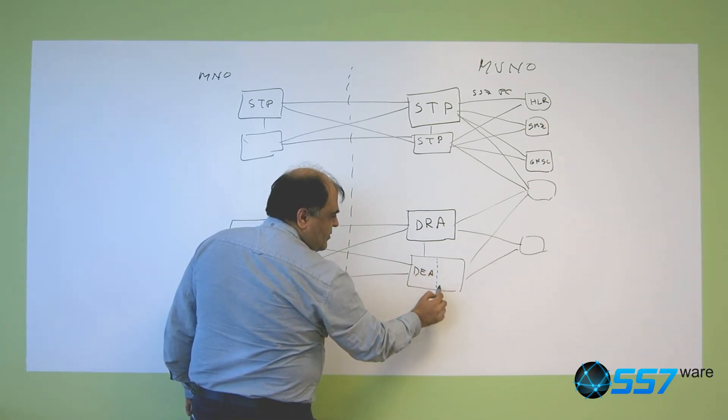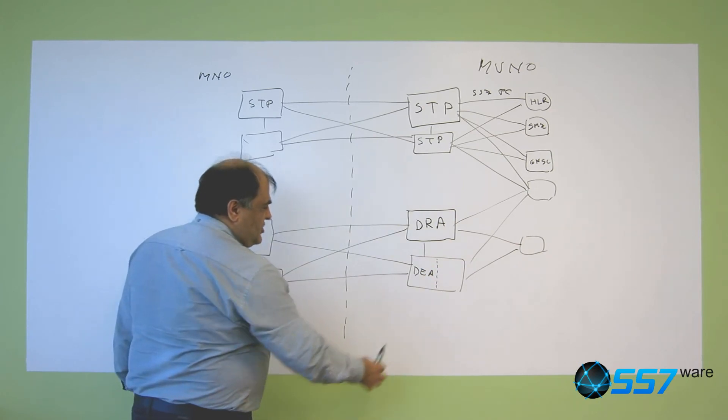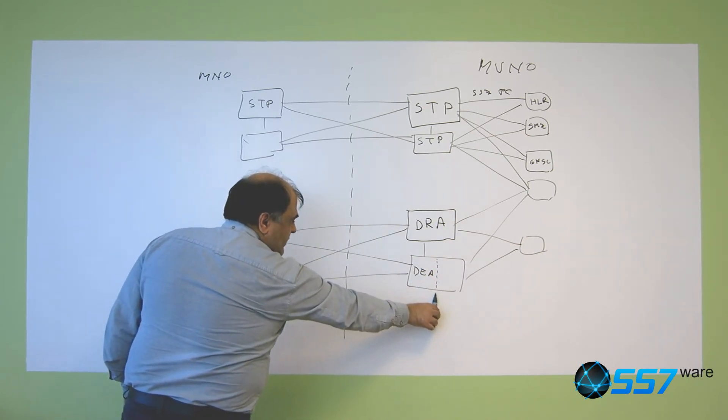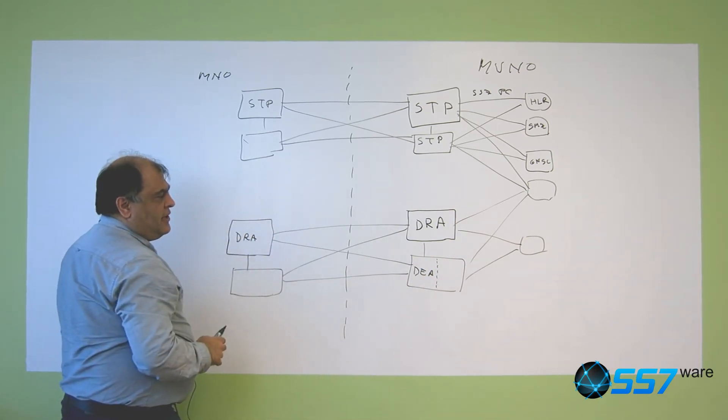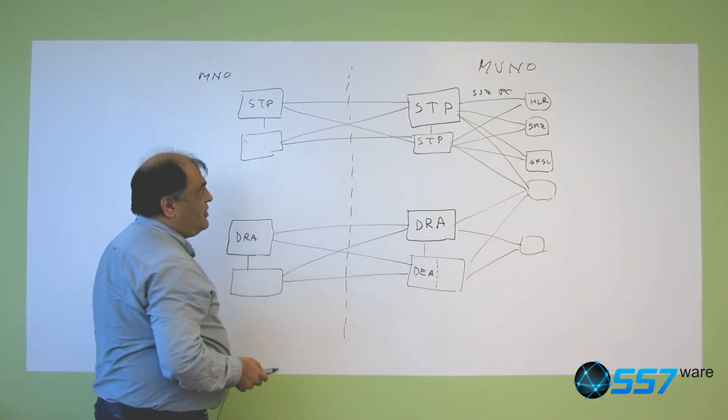Which is typically just a part of the routing agent, which is a different view of the diameter network exposed to the other operators.